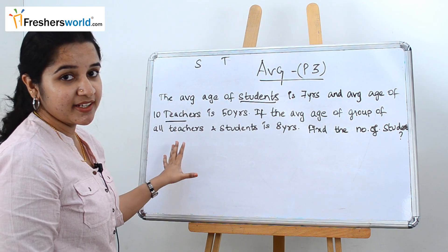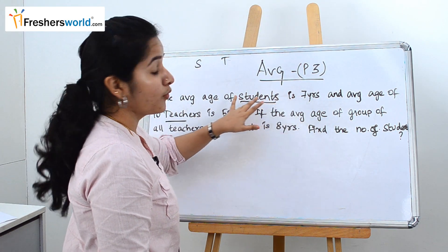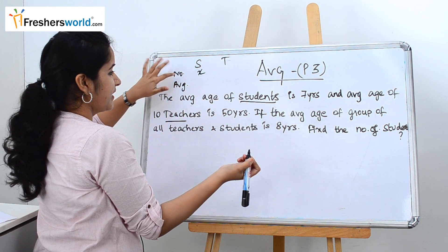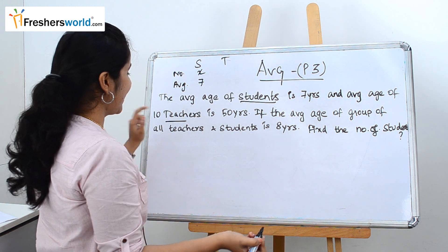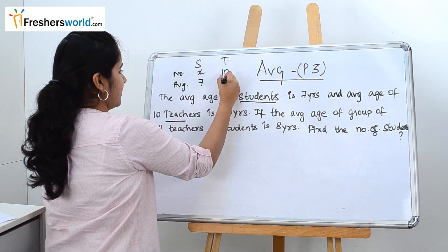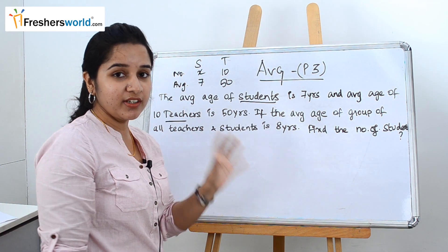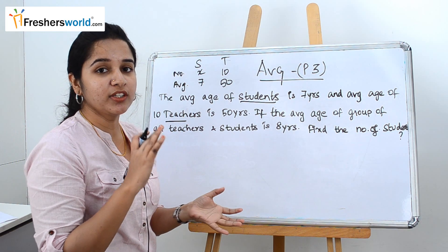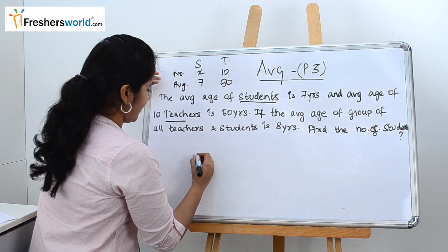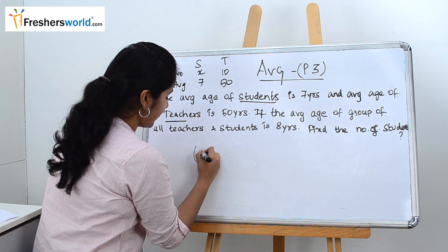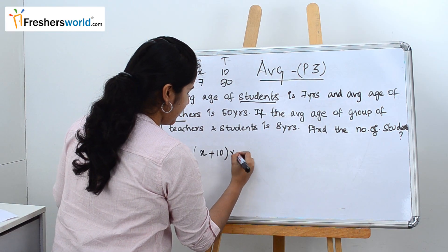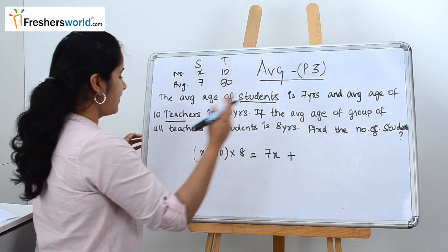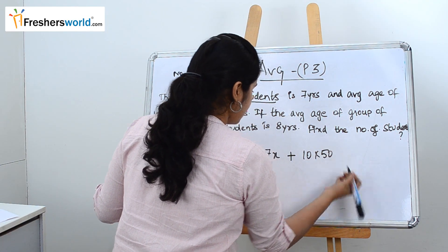To form the equation, you need both sides. The average age of students is 7 years and we don't know the number of students, so let's take it as x with average 7. The number of teachers is 10 and their average is 50. For the left-hand side, the total number of teachers and students is x plus 10, and their overall average is 8 years. So the equation becomes: (x plus 10) into 8 equals 7 into x plus 10 into 50.